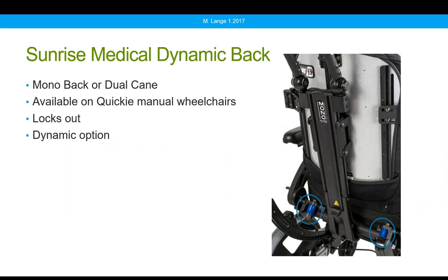Sunrise Medical also has a dynamic back with blue polymers visible. It works with their mono back or dual back canes and is available on their Quickie manual wheelchairs. It has a lockout feature and allows the client to extend and then assists them back to upright. In my personal experience, which is limited as it's a rather new product, the pivot point is rather low. I have a client currently moving their dynamic footrest and headrest readily, but the back is not moving at all, and we believe it's because of the pivot point.